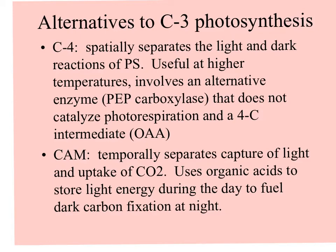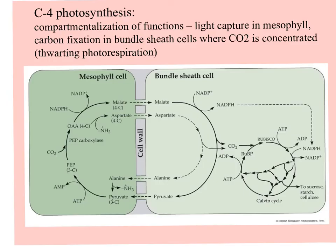CAM photosynthesis separates the capture of light and uptake of carbon dioxide temporally. Organic acids store the energy during the day to fuel carbon fixation at night, so this is truly dark fixation in CAM photosynthesis. In the mesophyll of the leaf, cells full of chloroplasts capture light. The malate — the four-carbon intermediate — provides energy in the bundle sheath cells where carbon dioxide is concentrated, thwarting photorespiration and allowing the Calvin cycle to form sugar molecules.